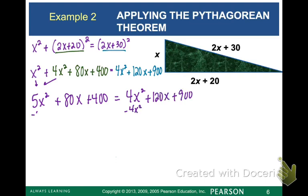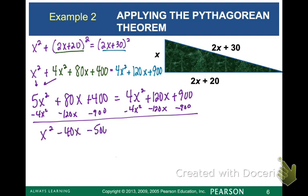And then we need to get everything on the same side. So I'm going to move the 4x squared, the 120x, and the 900 over to the left side. And now we have a quadratic equation left that we can factor.